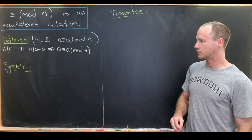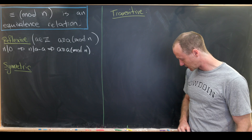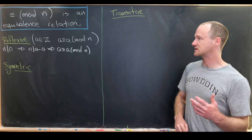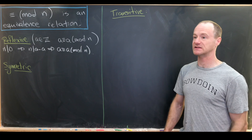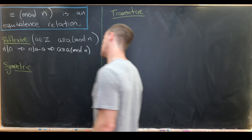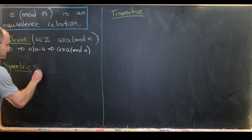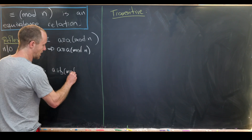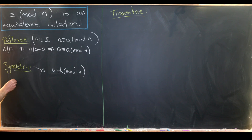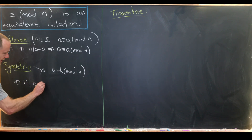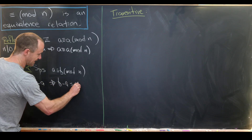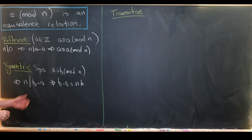The next thing we need to prove is that this is symmetric. So we need to show that a is congruent to b mod n implies that b is congruent to a mod n. Suppose that a is congruent to b mod n. That tells us that n divides b minus a, which means b minus a equals n times k for some integer k.